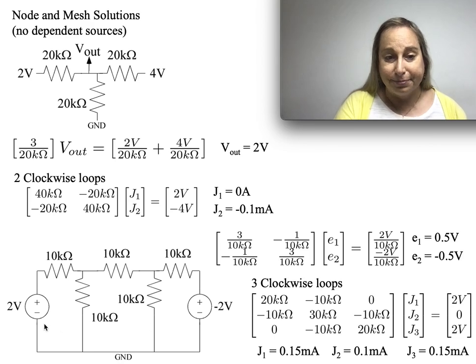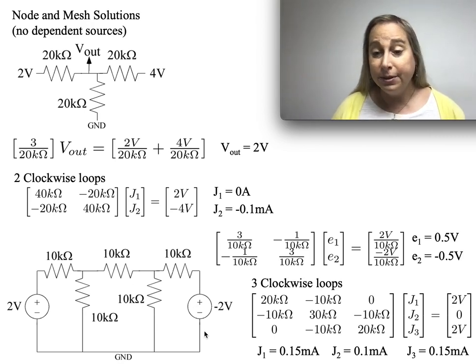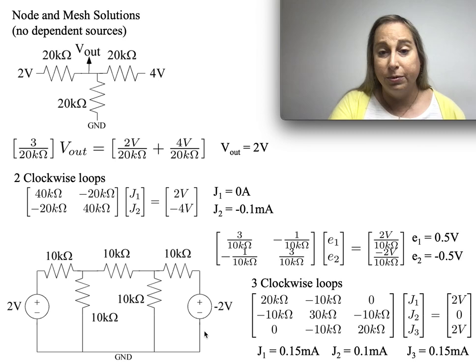And what I end up finding is I can find that I'm getting a current this way, a current this way, and a current this way that solves out as a result. So it turns out that you can actually get very comfortable with these kinds of loop and mesh analysis.